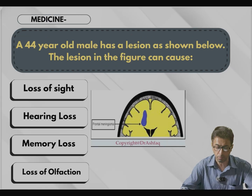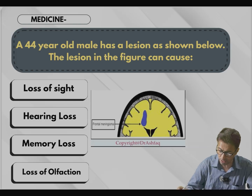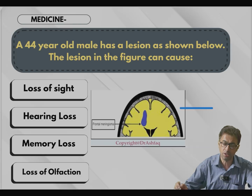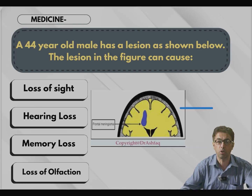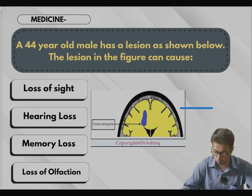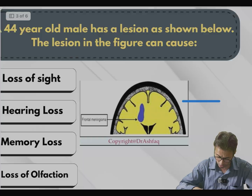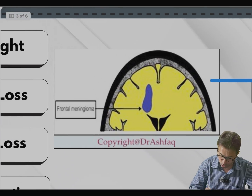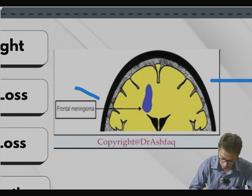Going to the next question from medicine. The question reads: a 44-year-old male has a lesion as shown. The lesion in the figure can cause — we need to focus on the image and then come to the conclusion. If you enlarge it, it shows a frontal meningioma.